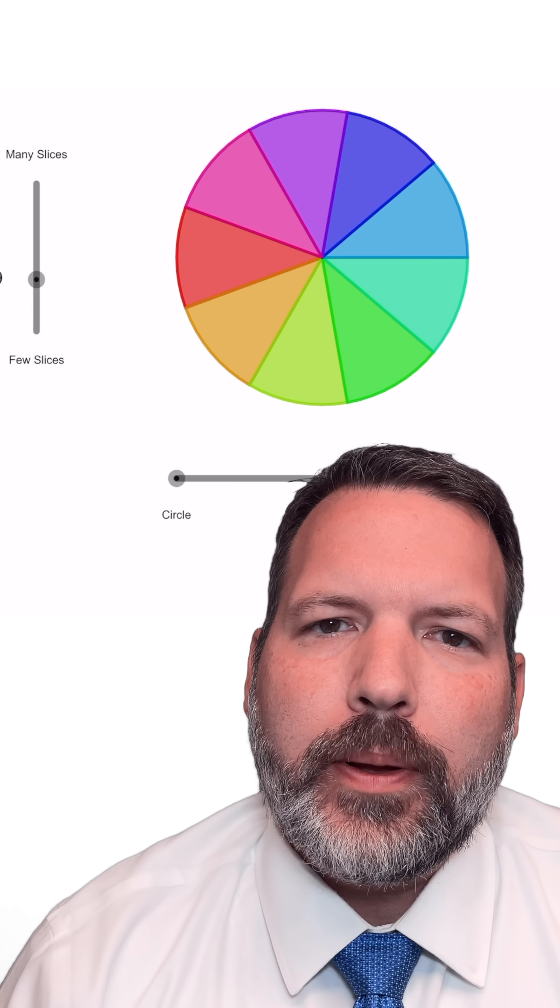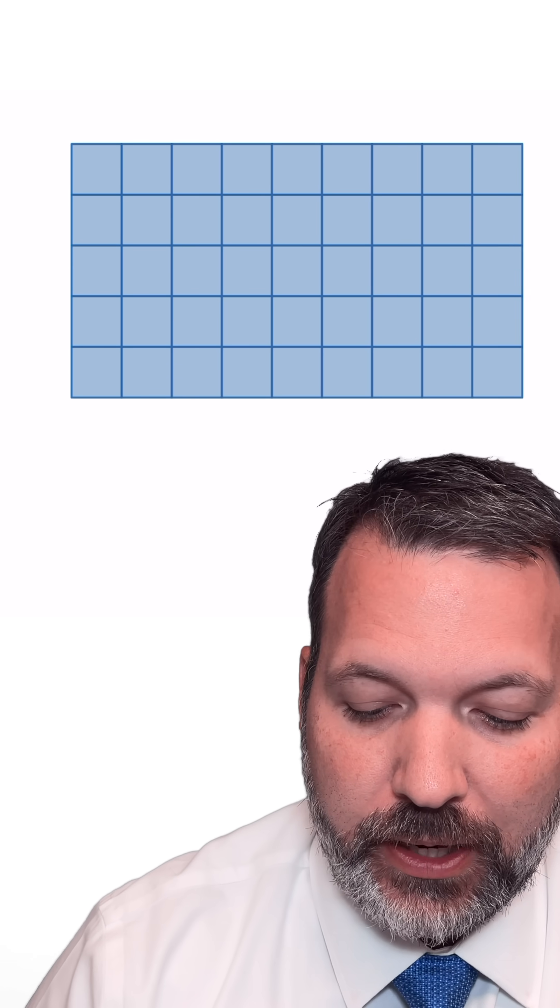Why is the area of a circle pi r squared? With a regular old rectangle, it's easy enough to see why the area is what it is. We can simply find the height of that rectangle, find the length of that rectangle, that's something we could measure with a ruler, and then we just multiply those two numbers together.